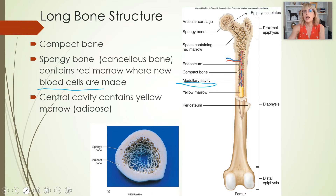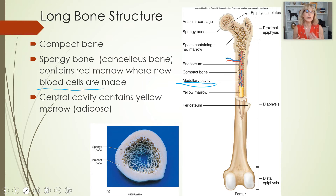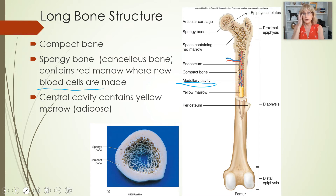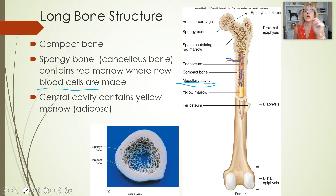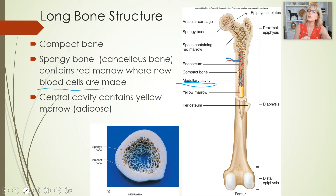Long bones have ends. The end closer to the body is called the proximal epiphysis, and the end farther from the body is the distal epiphysis. At the end of each epiphysis there's a joint, and so there's a bit of hyaline cartilage. The hyaline cartilage that is part of a joint is called articular cartilage, because a joint is called an articulation.